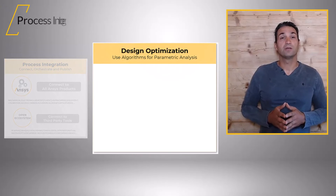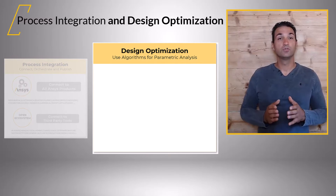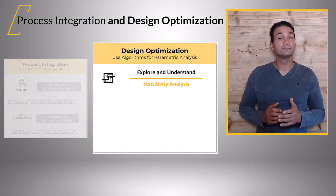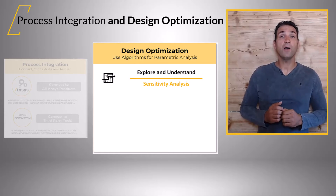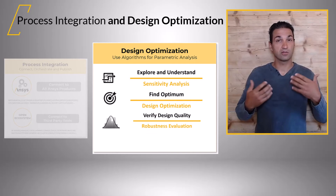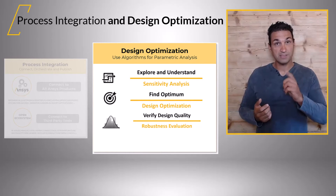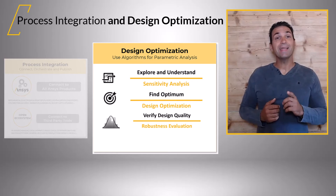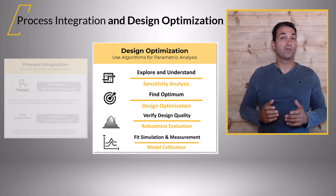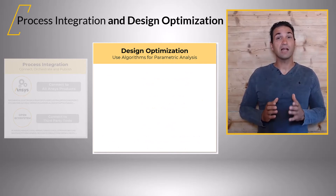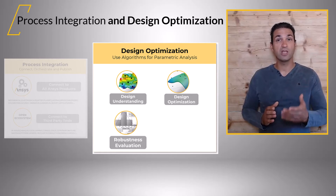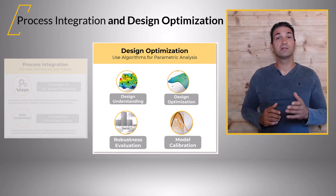The second part of PIDO is design optimization, which aims to better understand your design and the different options, learn how to optimize your product, find an improved design that has the desired quality, is robust against perturbations, and fit simulation and measurement data. For design optimization, the necessary algorithms for design understanding, optimization, robustness evaluation, and model calibration are available.